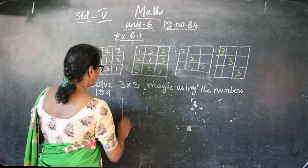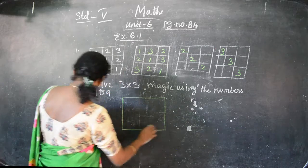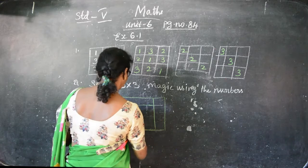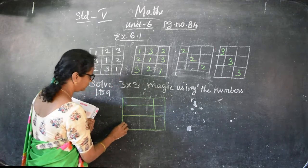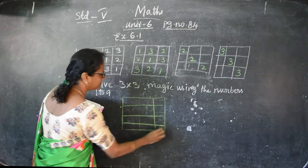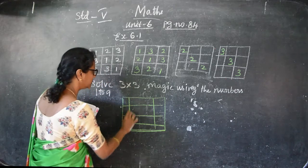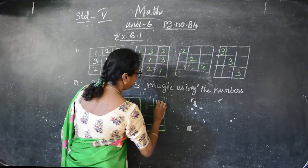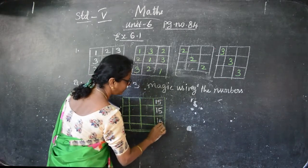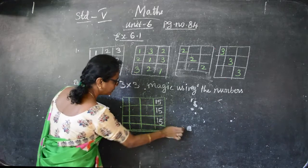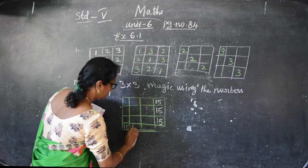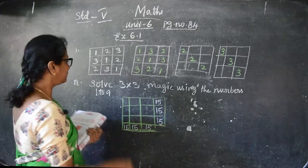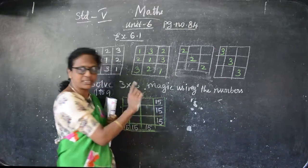Here they are given the squares and you have to get the answer 15 if you add together. The numbers 1 to 9 should come. So what you have to do - if you have to give 15, the answer must be 15. Here also it should be 15, and here also 15, and 15, and 15. You have to write the numbers 1 to 9 and fill each square so the total comes to 15.